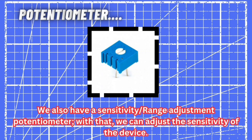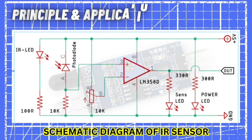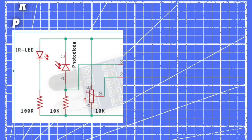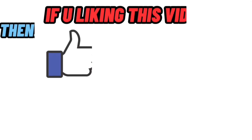Now let's jump to our fourth component: the potentiometer. In an IR sensor, if you need to adjust the sensitivity or the range, you can use this potentiometer to do so. This is a schematic diagram of an IR sensor. If you want to make your own IR sensor you can follow this schematic diagram and design your own PCB, but I recommend purchasing an IR sensor online or from a local hardware store since it comes at a very cheap price.